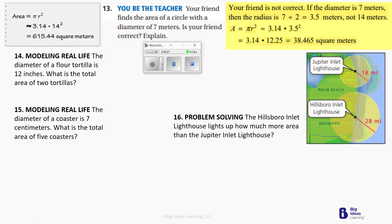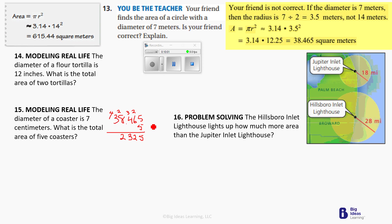So let me do that. We're going to take 38.465 and multiply it by 5. 5 times 5 is 25, carry the 2; 6 times 5 is 30 plus 2 is 32; 4 times 5 is 20 plus 3 is 23; 8 times 5 is 40 plus 2 is 42; 3 times 5 is 15 plus 4 makes 19. Remember, the decimal point comes over 3 places. That's going to give us 192.325 for 5 coasters.